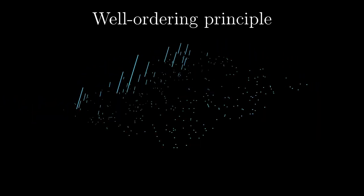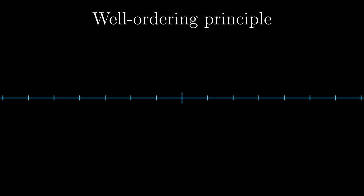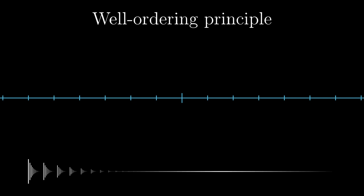This seems absurd at first glance — after all, there is an uncountable number of real numbers, who knows how many — but the proof is about as straightforward as the proof that every two sets have comparable cardinalities. We consider the class of all ordinal numbers and use transfinite recursion with choice to gradually assign real numbers to ordinal numbers.